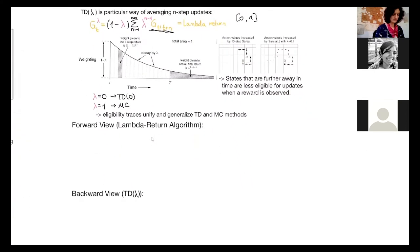So there are two different views. The forward view, which is also called the lambda return algorithm, and the backward view, which is TD lambda. And yeah, the forward view is more for theory and backward view is the actual mechanism and how it's mostly used.